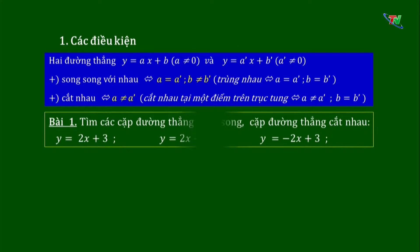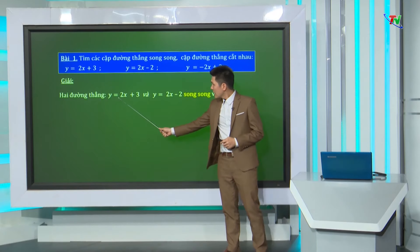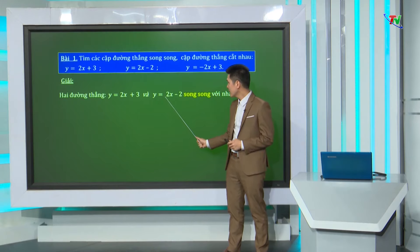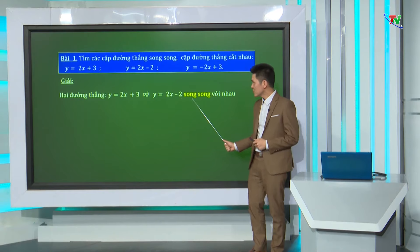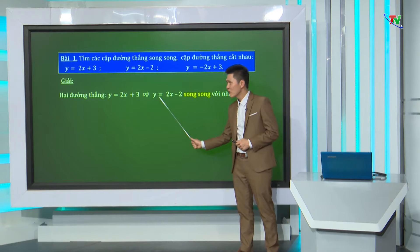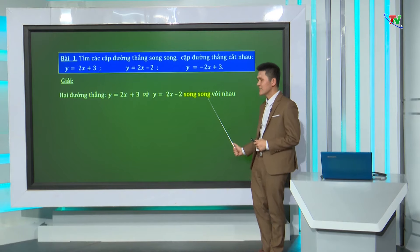Mời các em tìm hiểu bài tập số 1: tìm các cặp đường thẳng song song, cặp đường thẳng cắt nhau, với Y bằng 2x cộng 3, Y bằng 2x trừ 2, Y bằng âm 2x cộng 3. Chúng ta có 3 đường thẳng, lần lượt xét từng cặp. Cặp đường thẳng thứ nhất: Y bằng 2x cộng 3 và Y bằng 2x trừ 2 có A bằng A', B khác B', vậy 2 đường thẳng này song song với nhau. Cặp thứ 2: Y bằng 2x trừ 2 và Y bằng âm 2x cộng 3 có A khác A', nên chúng cắt nhau.